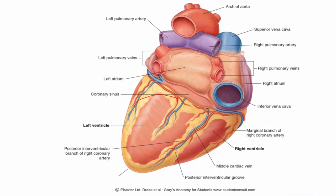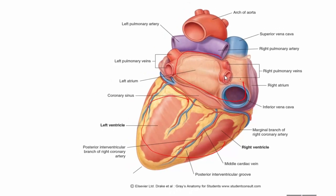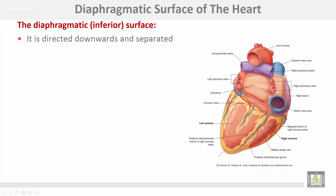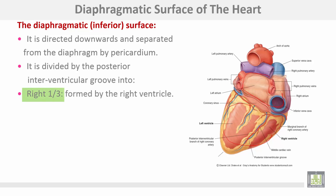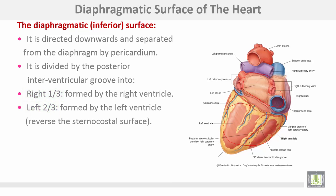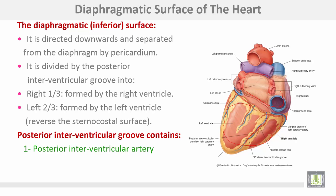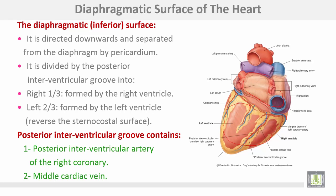The diaphragmatic surface of the heart is directed downwards and separated from the diaphragm by the pericardium. It is divided by the posterior interventricular groove into right one-third formed by the right ventricle and left two-thirds formed by the left ventricle — the reverse of the sternocostal surface. The posterior interventricular groove contains the posterior interventricular artery of the right coronary and the middle cardiac vein.